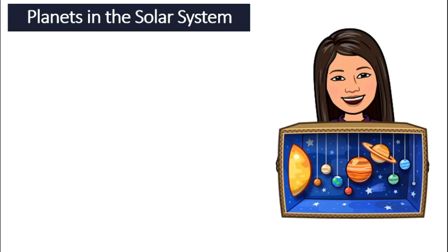In our solar system, we have eight planets. Can you memorize or arrange the eight planets according to their position? We will start from the one closest to the sun.